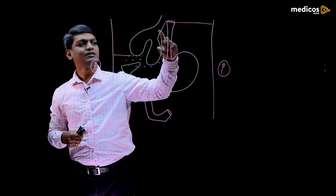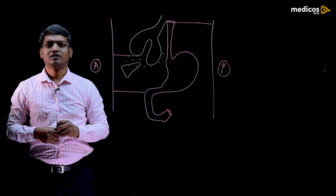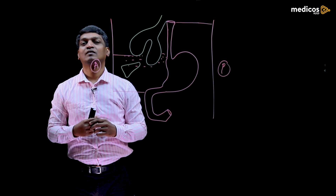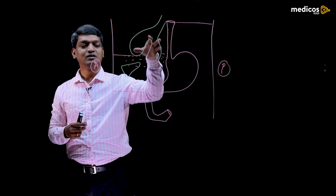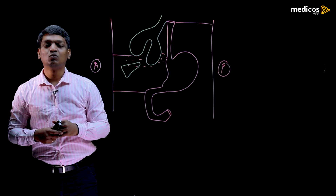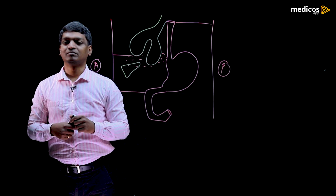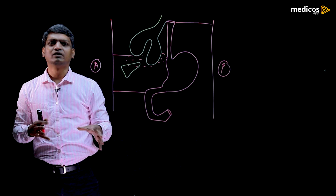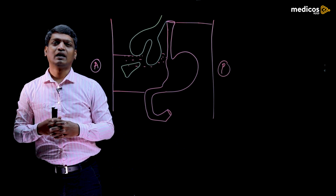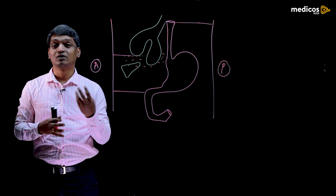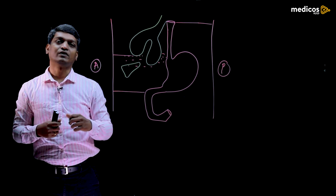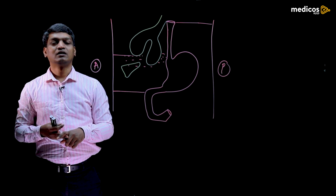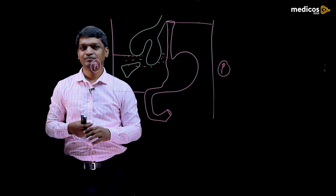Now consider only the esophagus. The post-laryngeal portion of the foregut elongates as the lung and stomach develop, and it forms the esophagus. Initially, the lining epithelium proliferates and narrows the lumen of the esophagus — not completely obliterating it, just narrowing it. Later on, the proliferated cells undergo degeneration and recanalization occurs, giving you the esophagus. Initially it is lined by columnar cells only, but later it is converted into non-keratinized stratified squamous epithelium — that is called metaplasia.